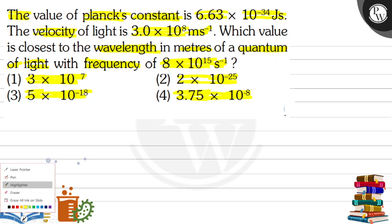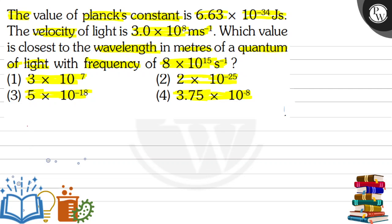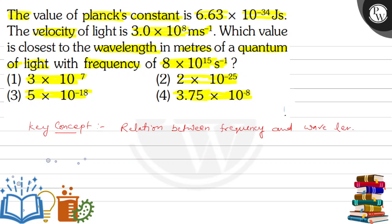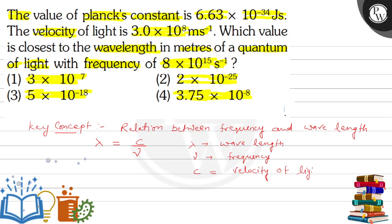For this, our key concept is the relation between frequency and wavelength. The formula is lambda equals c divided by nu, where lambda is the wavelength, nu is the frequency, and c is the velocity of light.